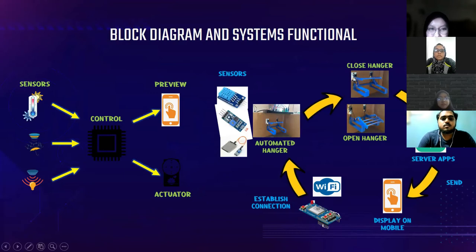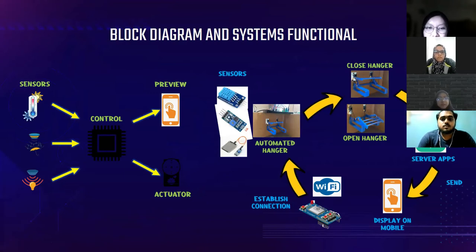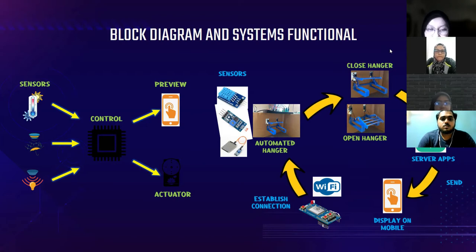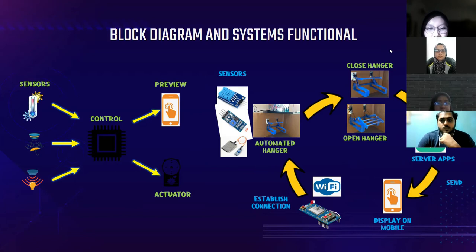For the project specification block diagram, there are three inputs: a light sensor, a rain sensor, and a temperature sensor. The light sensor provides input based on light levels. The rain sensor functions when rain water touches the rain sensor panel. The temperature sensor detects the surrounding temperature and humidity. For the process, we are using the ESP32, a Wi-Fi module microcontroller, programmed using a programming software as the automatic controller, compiled and downloaded into the microcontroller.